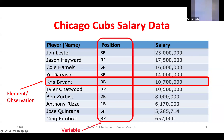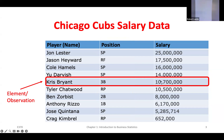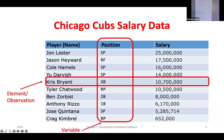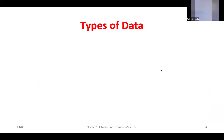Every column represents a variable. Here we've collected information on different players: their names, their position on the team, and their salary. This could be any company — here's your employees, assistant manager, assistant to the regional manager, and then salaries as well. So elements are observations, and variables are our columns.